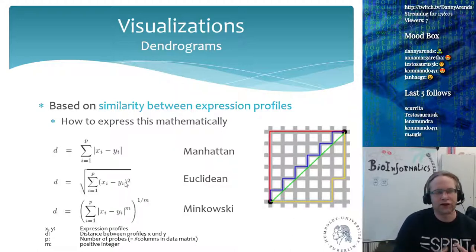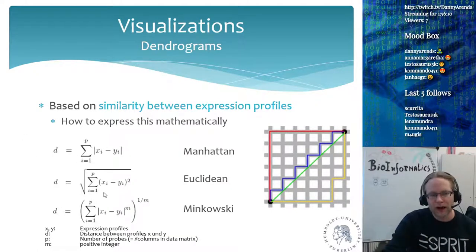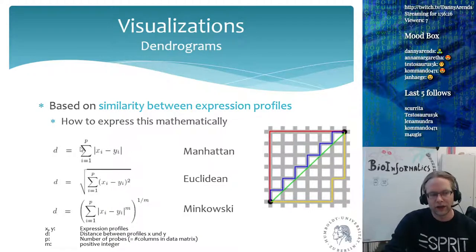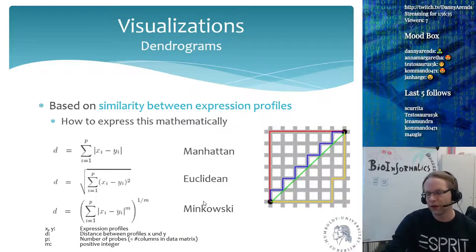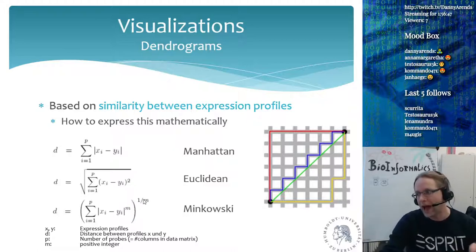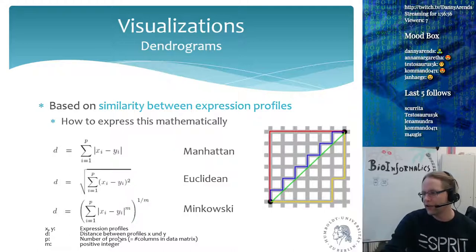The Minkowski distance is a generalization of Euclidean distance. The formula is the same except you raise the difference to the power of m instead of two, sum all of these up, and then take the mth root of the distance value. So m is a positive integer, p is the number of probes, d is the distance between profiles x and y, and x and y are the two different expression profiles — the two columns in your gene measurement matrix.